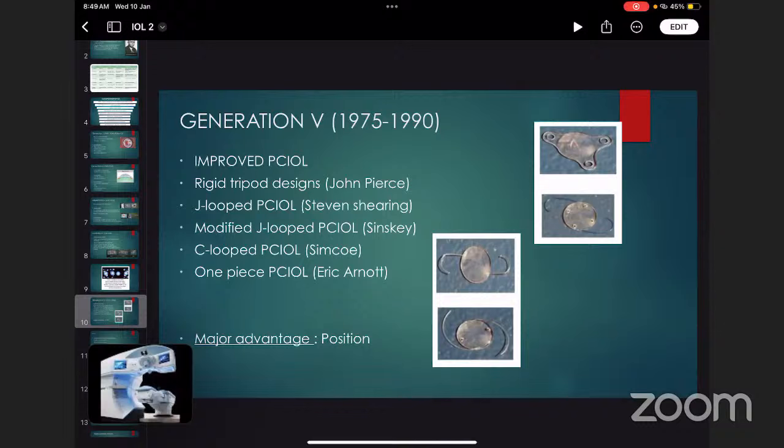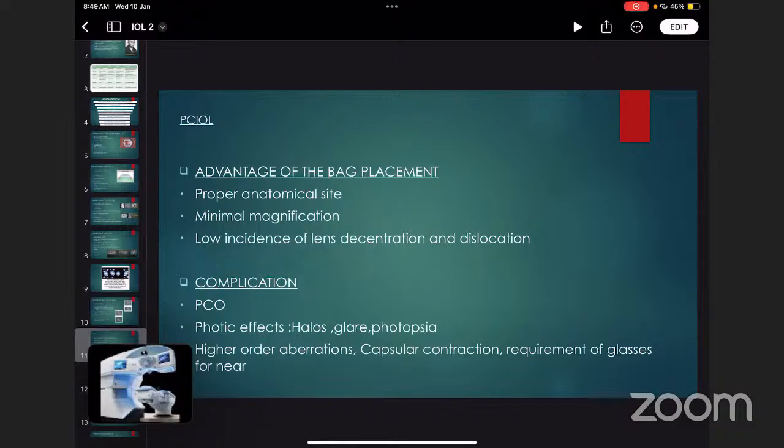Generation 5, from 1975 to 1990, was improved posterior chamber IOL with designs like rigid tripod design, J-loop PC IOL, modified J-loop PC IOL, C-loop PC IOL, and One Piece PC IOL. The major advantage was the position. As it was placed in the back, advantages were proper anatomical site, minimal magnification, low incidence of lens decentration and dislocation. Still, complications included posterior capsule opacification, photopic effects such as halos, glare, photopsia, higher order aberrations, capsular contraction, and requirement of glasses for near.